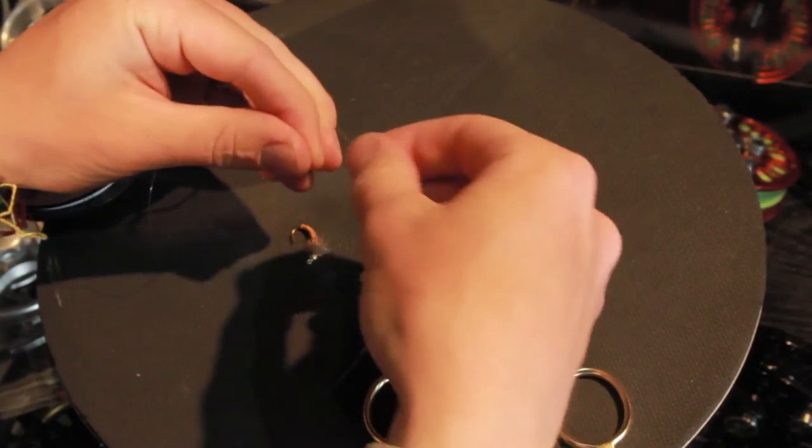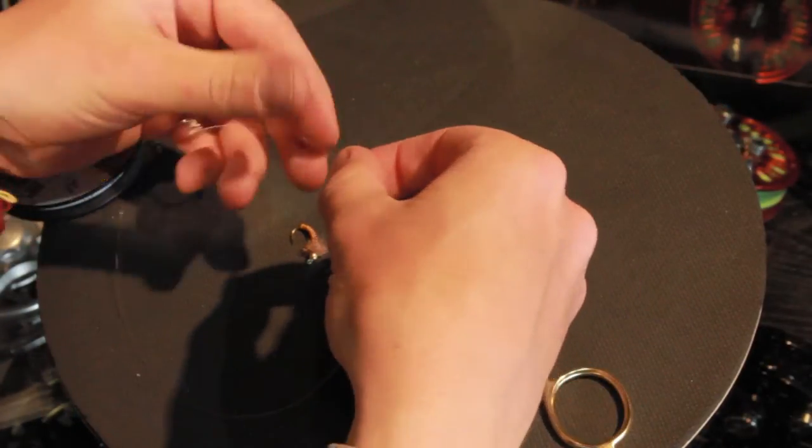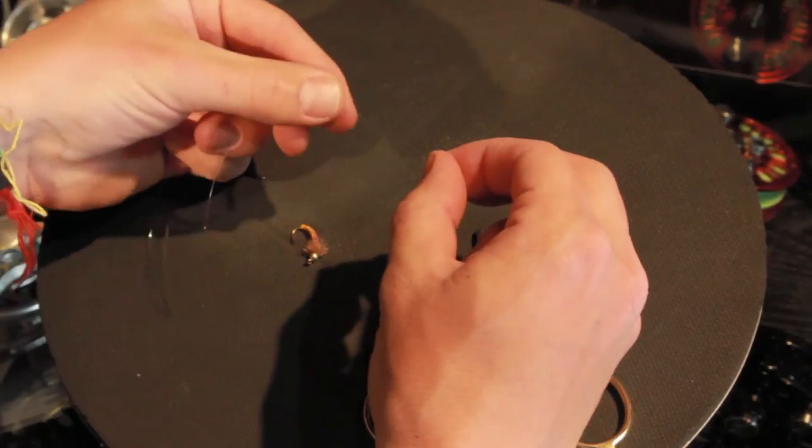Overlap the tippet about four or five inches on top of each other and make a loop. I do mine facing downwards.